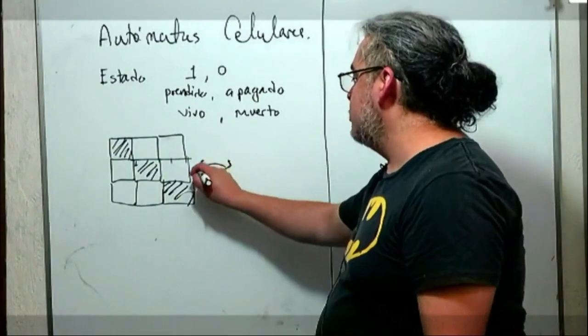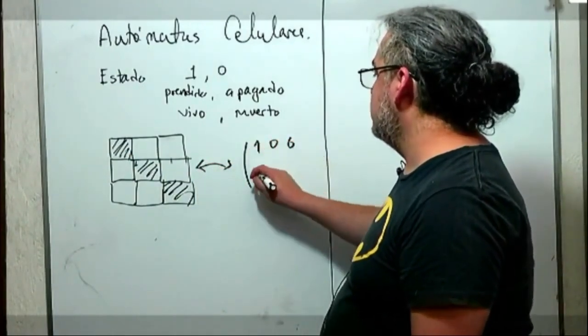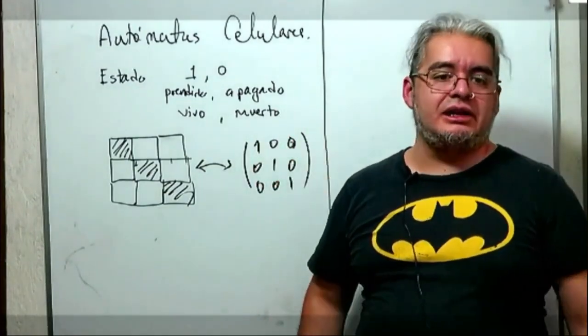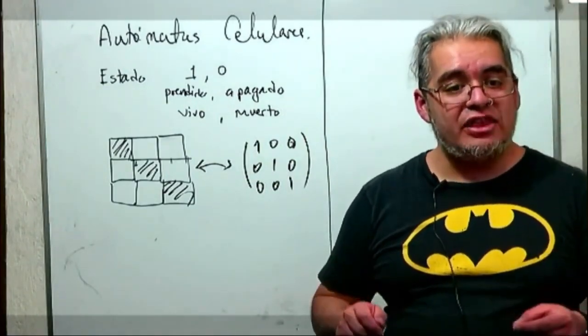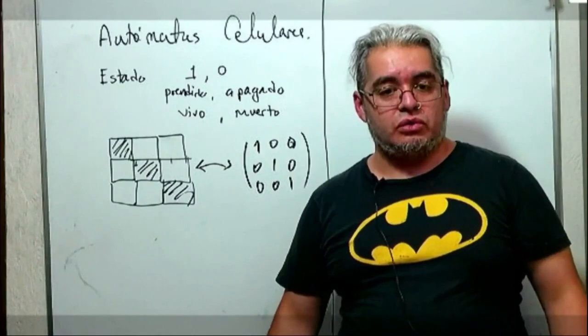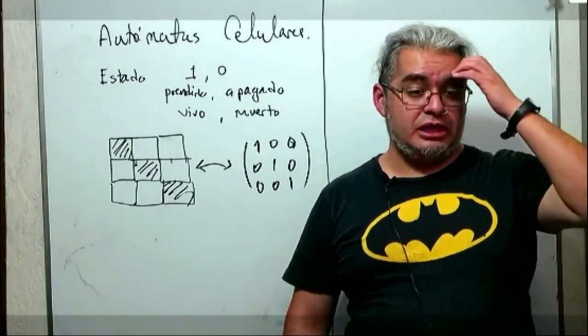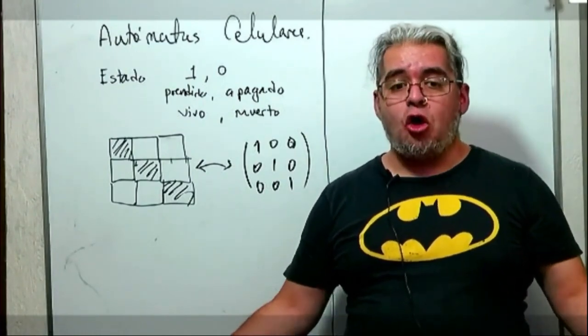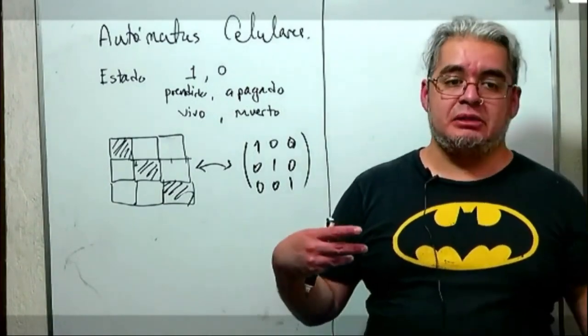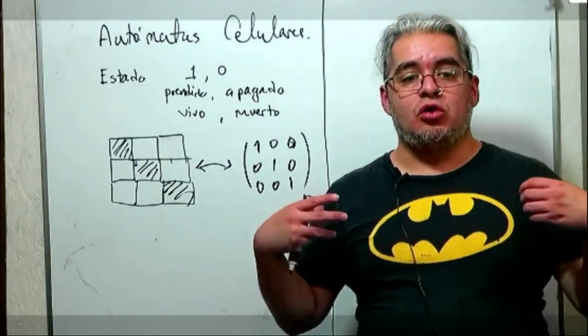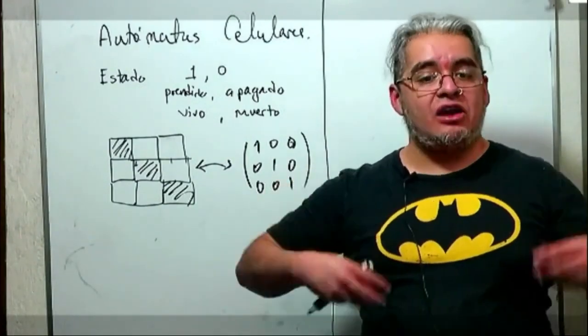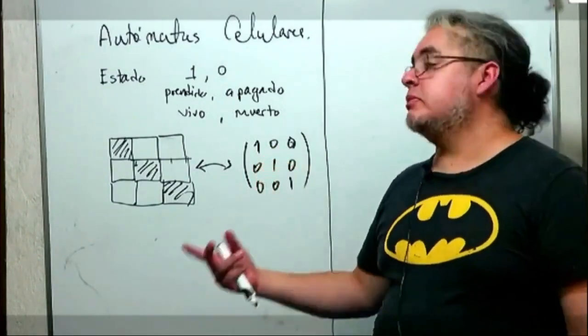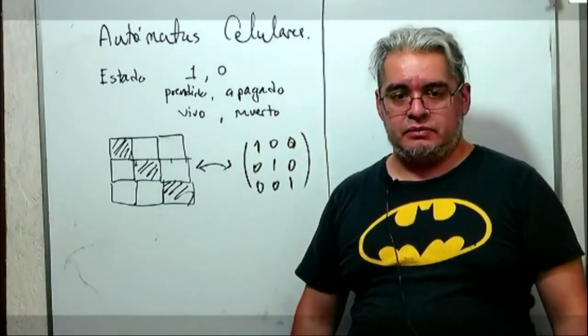Entonces podemos gráficamente hacer una representación en donde cada celda con estado 1 está pintada y las que tienen variable 0 están sin pintar. En este caso tenemos esos 3 pintados. Esta configuración, que también podríamos pensarla como una matriz de 1, 0, 0, 0, 1, 0, 0, 1, es el estado al tiempo T igual a 0 de nuestro sistema en autómata celular.